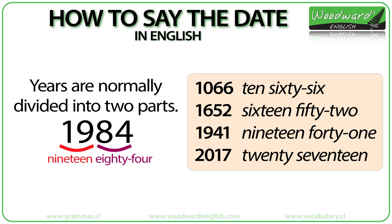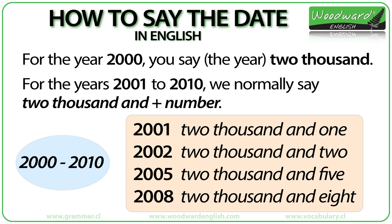Years are normally divided into two parts: the first digit or first two digits, and the last two digits. In this example the year is divided into the first two digits, 19, and the last two digits, 84, so you would say the year is nineteen eighty-four. Look at these examples: ten sixty-six, sixteen fifty-two, nineteen forty-one, twenty seventeen.